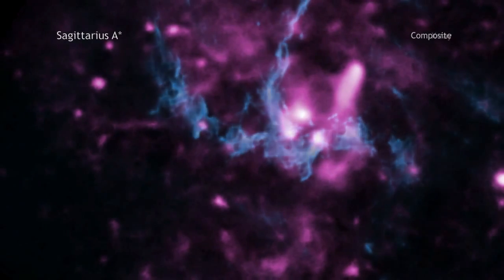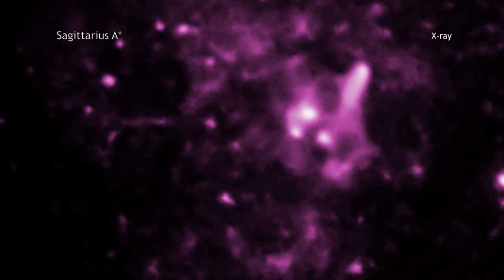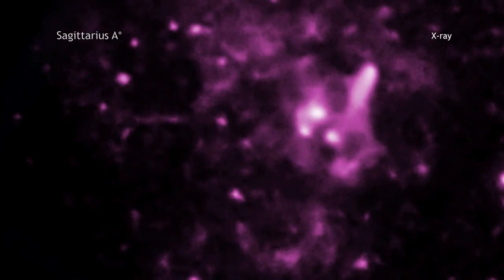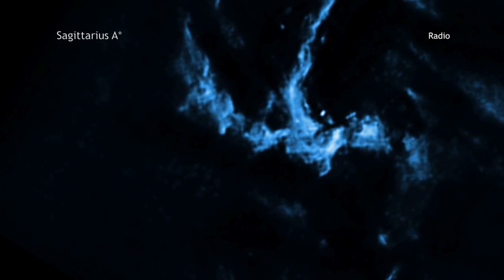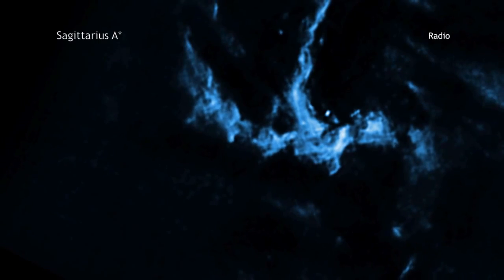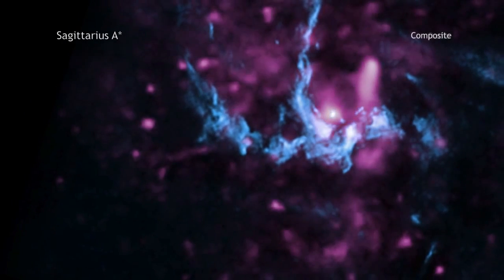A new study involving data from NASA's Chandra X-ray Observatory and the Very Large Array has provided the best case yet for a jet from our galaxy's supermassive black hole.